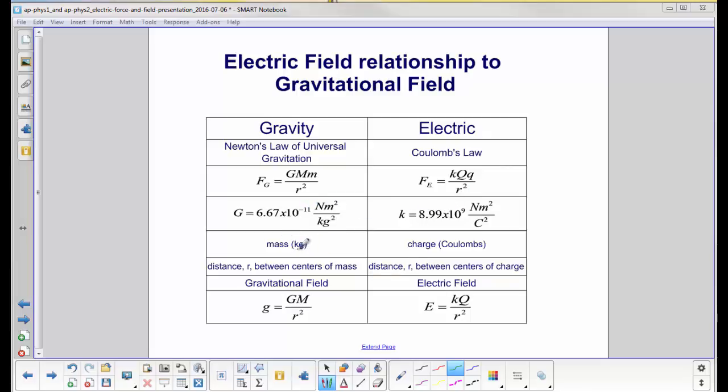Here's what generates the field: mass, which is measured in kilograms, and charge, which is measured in Coulombs. They both depend on the distance r. In this case, it would be the center of mass for gravity, center of charge for the electric field. Here we go: gravitational field, electric field, and then the definitions for those two.